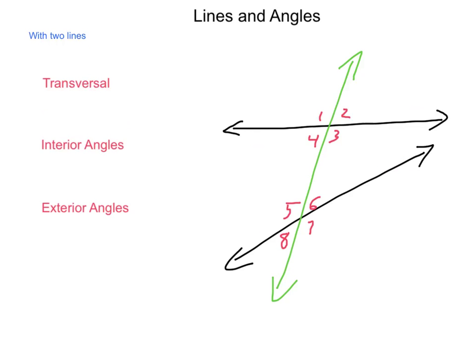When we have two lines, such as the two black lines here — which I am going to call A and B — if these two lines are crossed by another line, we'll call it M, then the line that cuts across the other two is called a transversal line. When the transversal intersects these other lines, it has to be at unique or distinct points.